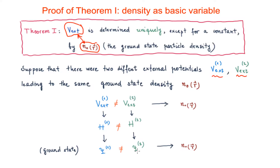The ground states of the Hamiltonians are different. However, considering the statement we are making, the ground state density associated with these two different ground state wave functions is going to be the same. Even though the ground state wave functions are different, the ground state electronic density can be the same, since the density is a kind of average obtained from the ground state wave functions.